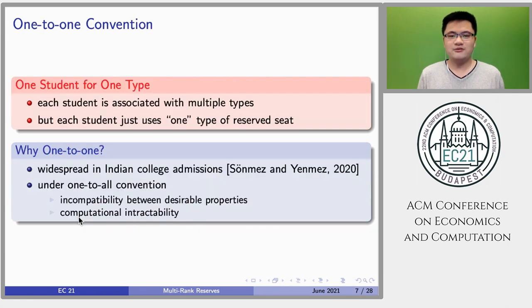If each student belongs to one type, then the problem is easy to solve. However, in reality, each student may be associated with multiple types.